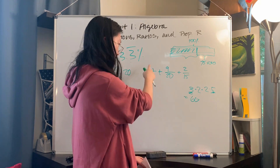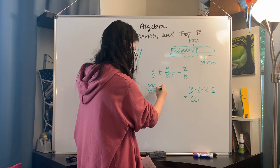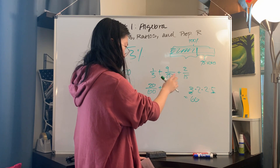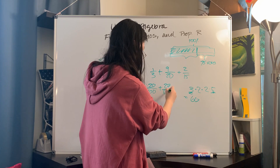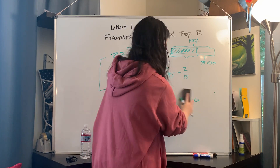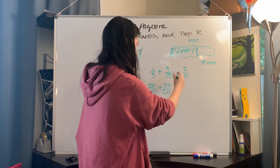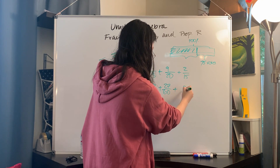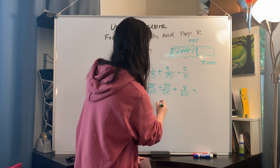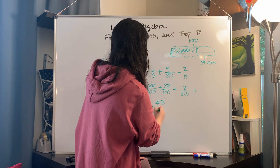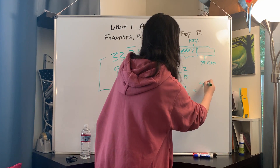So 1/3 — we multiply the top and bottom by 20 — gives us 20/60. For 9/20ths, we multiply the top and bottom by 3 to get 27/60ths. And for 2/15ths, we multiply the top and bottom by 4 to get 8/60ths. When we add them together, we get 20 plus 27 plus 8 is 55, so 55/60ths.